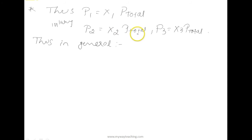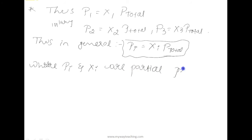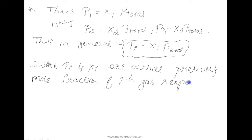In general, we can write Pi equals xi times P_total, where Pi and xi are the partial pressure and mole fraction of the i-th gas respectively. If the total pressure of a mixture of gases is known, this equation can be used to find the pressure exerted by individual gases. This completes partial pressure in terms of mole fraction.